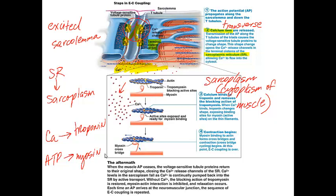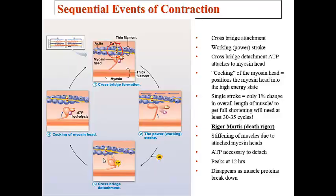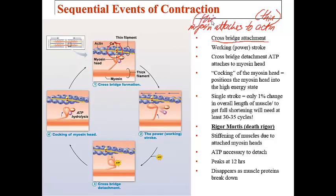Once these two interactions occur — calcium with troponin, and ATP with myosin — the crossbridge can form. The A&P Flix cross-bridging video and the corresponding focus figure will help you understand this cycle. Crossbridge attachment forms because myosin attaches to actin. Remember: actin is the thin filament and myosin is the thick filament.